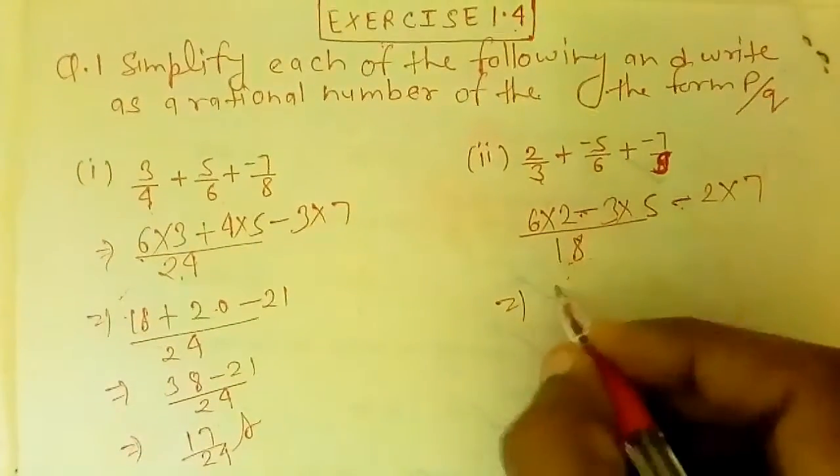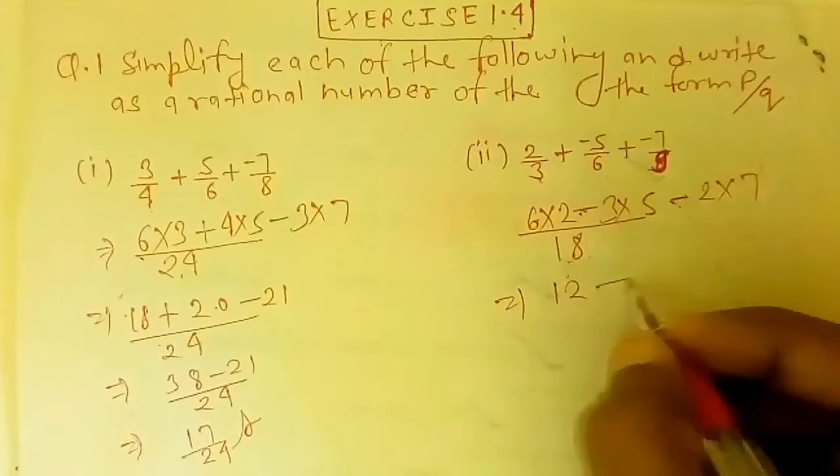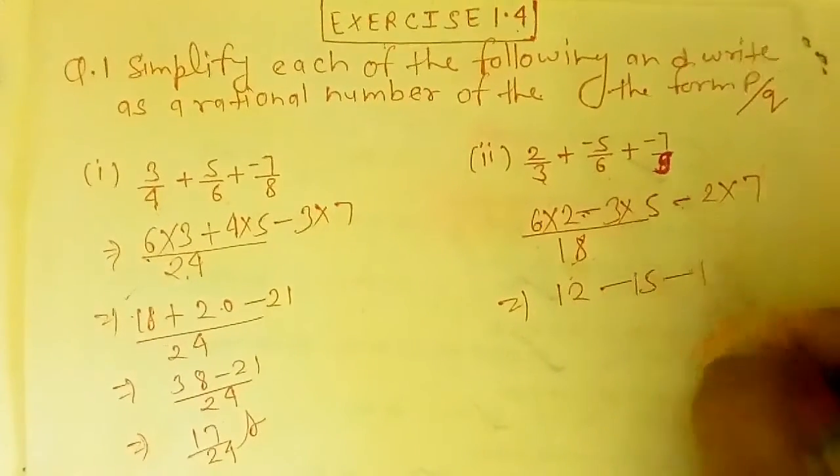6 and 2 will be multiplied - 12. 5 and 3 will be 15. 7 and 2 will be 14.